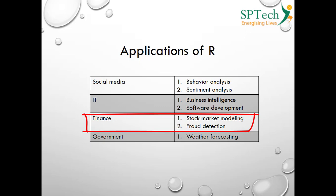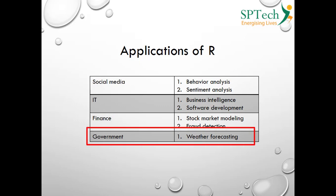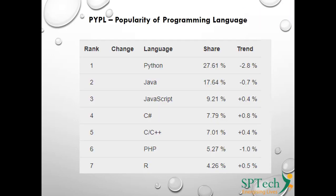In the government domain, R is used in weather forecasting. R is very much used in weather forecasting under government organizations. These are some of the main applications of R.